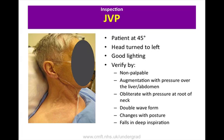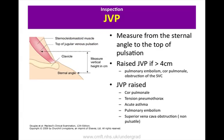Before pressing over the liver, check that the patient does not have any abdominal pain. When assessing the height of the JVP, measure the vertical distance from the sternal angle to the top of the pulsation. The normal JVP should be less than 4 cm. This should be expressed as so many centimetres raised, as you must add 5 cm to the visible JVP to give the actual JVP. For the respiratory examination, the JVP is raised in cor pulmonale and superior vena cava obstruction.